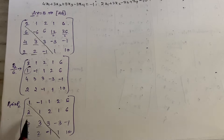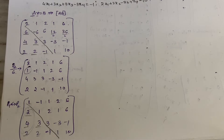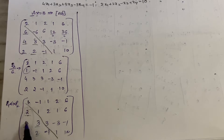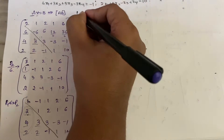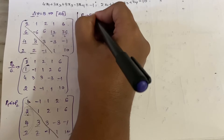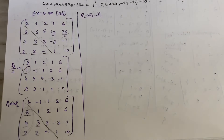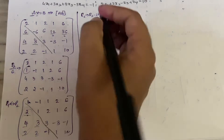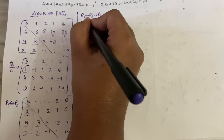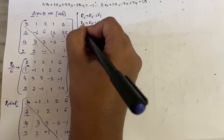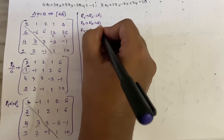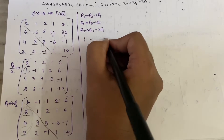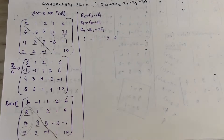Now identify the diagonal. We need to make the elements below the first pivot zero. We apply: R2 → R2 - 2R1, R3 → R3 - 4R1, R4 → R4 - 2R1. This way the first column below the pivot becomes all zeros, and the calculations remain straightforward.